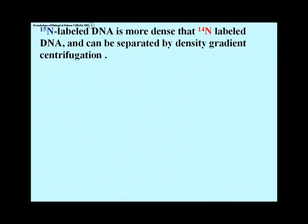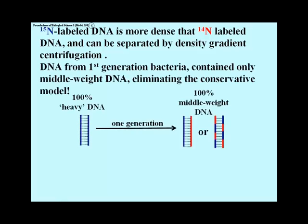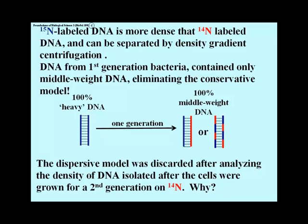Meselson and Stahl did the experiment and extracted DNA from the first generation of cells. If the cells produced a 50-50 mix of heavy and light nitrogen double helices, they would be able to separate them by density gradient centrifugation. The cells, in fact, contained 100% middleweight DNA — an equal combination of light and heavy nitrogen labeled DNA that behaved as if it was all of one density. That eliminated the conservative model of replication, leaving the semi-conservative and dispersive models. The dispersive model was eliminated by carrying this experiment out to a second generation of growth on the light nitrogen isotope. Now, can you explain why?